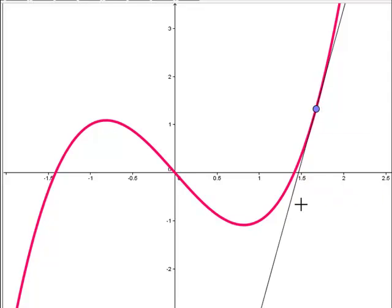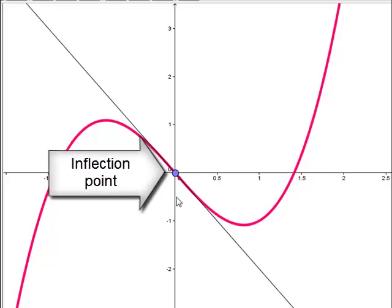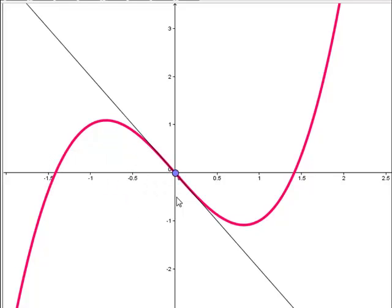Now we have a name for that point where it switched to concavity. This is called an inflection point because the graph went from concave down to concave up. In other words, the rate of change went from decreasing to increasing.